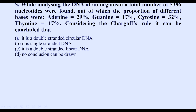Question five: while analyzing the DNA of an organism with 5,386 nucleotides, the base proportions were: adenine 29%, guanine 17%, cytosine 32%, and thymine 17%. Considering Chargaff's rule, what can be concluded?